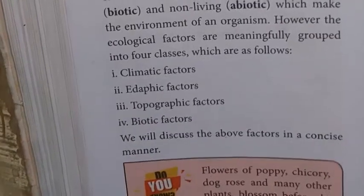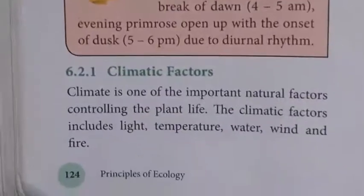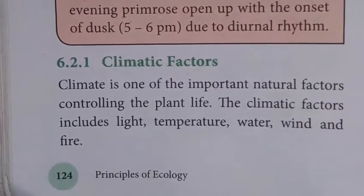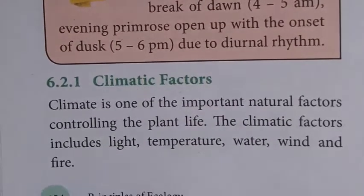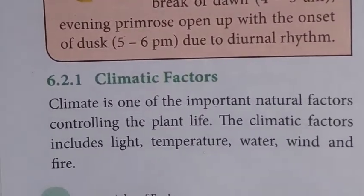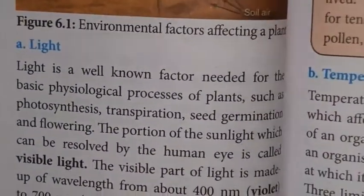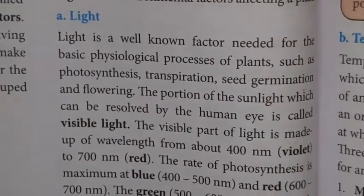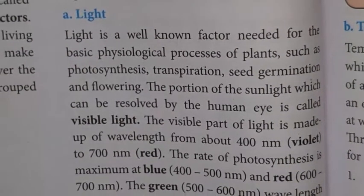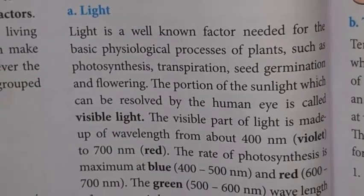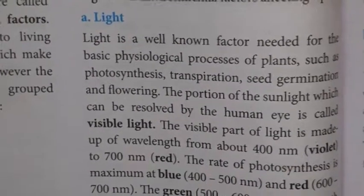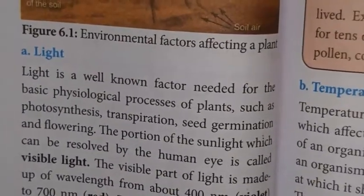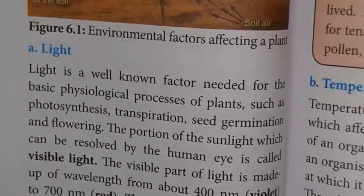The first ecological factor is the climatic factor. Climate is one of the most important natural factors controlling plant life. Climatic factors include light, temperature, water, wind, and fire. Light is a well-known factor needed for basic physiological processes of plants such as photosynthesis, transpiration, germination, and flowering.